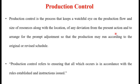Production control is the process that keeps a watchful eye on the production flow and size of resources along with their locations. It monitors any deviation from the production flow and arranges for prompt adjustment so that production may run according to the original or revised schedule. Production control also refers to ensuring that all activities occur in accordance with established rules and issued instructions.